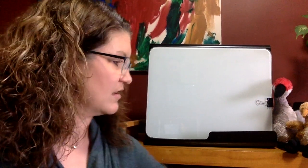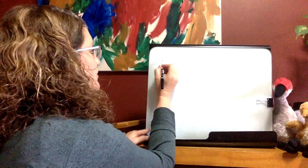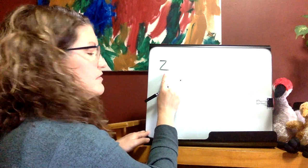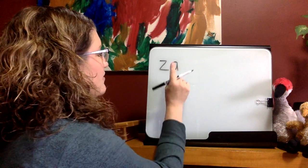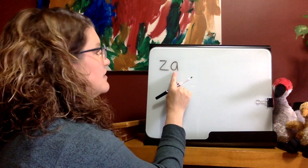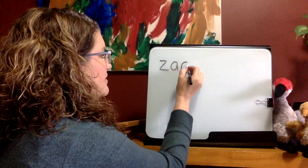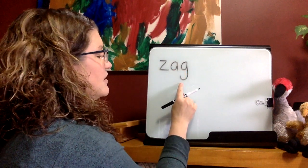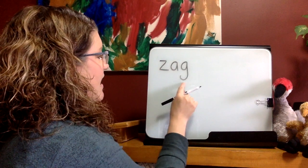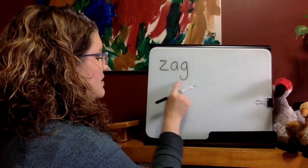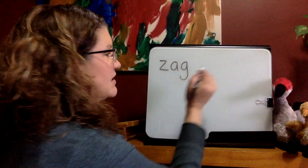Last, I'm going to do some writing on the board, and I'll be ready to listen to you do some blending. First word. Sound — yes, Z. Sound — yes, A. Sound — yes, G. Blend — 'zag.' Zag.